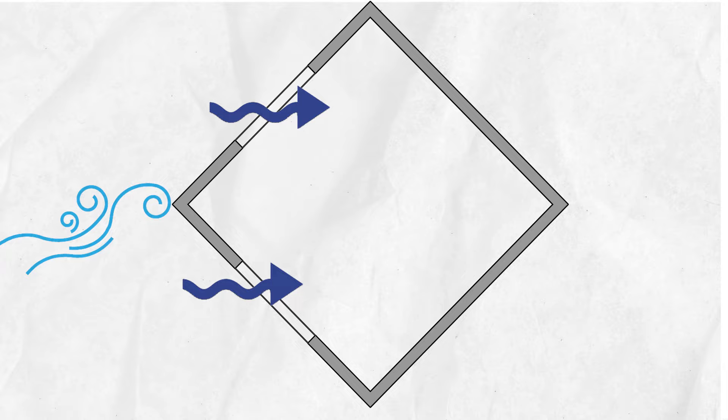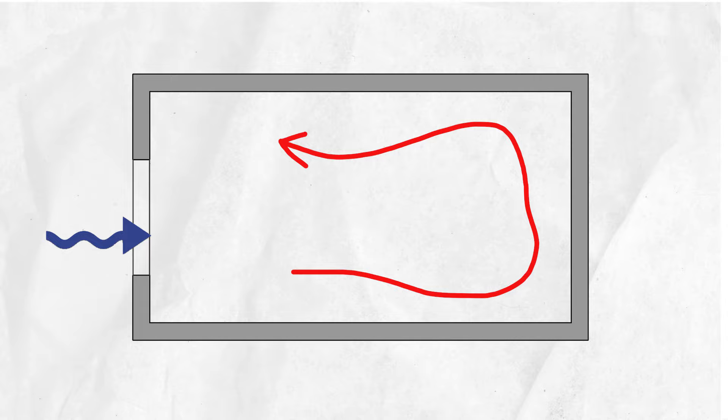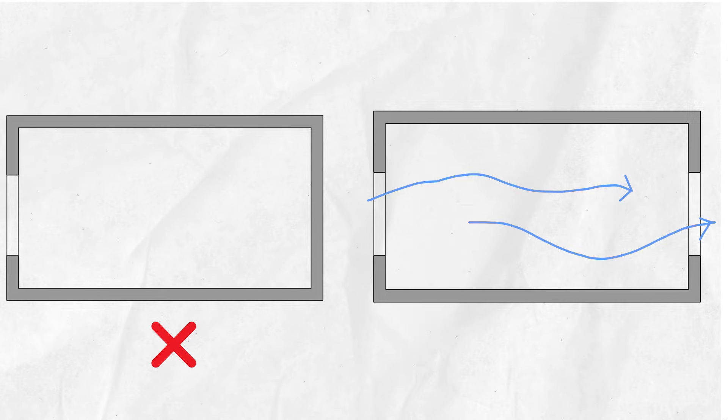Cross ventilation: the absence of an outlet opening means there can be no effective air movement through a building. Creating openings at both sides helps to force cool air inside the room, while the outlet forces warm air outside.